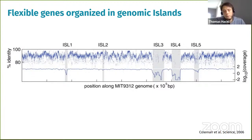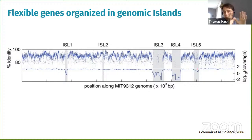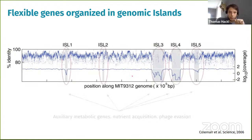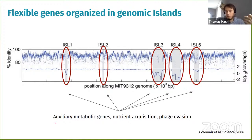It's already been shown that in Prochlorococcus, flexible genes — like in many other bacteria — are organized in what we call genomic islands. These were first illustrated in 2006 by comparing two different Prochlorococcus strains: finite regions in the genome enriched in flexible genes only present in a few strains but not in every cell. These regions tend to be enriched in accessory genes — auxiliary metabolic genes that help acquire nutrients and genes used in evading phages or other predators.